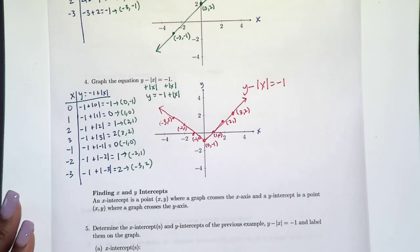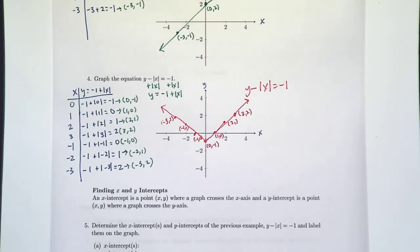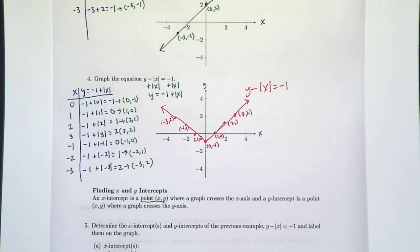Alright, so the last thing we're going to talk about in the 1.1 section is finding x and y intercepts. Let's talk about what intercepts are and then we'll talk about how to find them. An x-intercept is a point—that's very important—it is a point (x, y) where the graph crosses the x-axis. A y-intercept is a point (x, y) where a graph crosses or intercepts the y-axis.